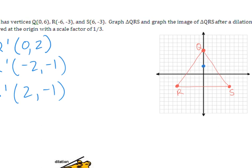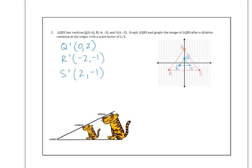So Q prime is at (0,2). (-2,-1) is R prime. (2,-1) is S prime. Connect. And it should look like our original image went through a size change and it actually got smaller because it had a scale factor of 1/3.